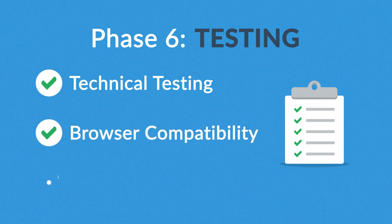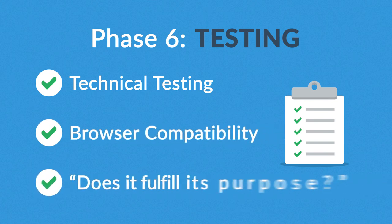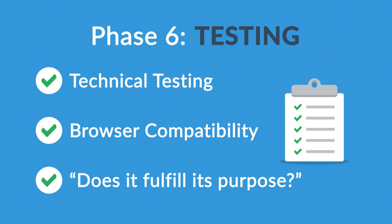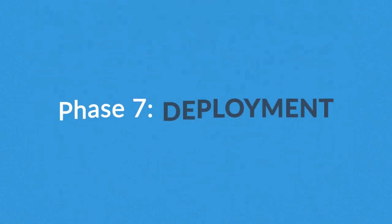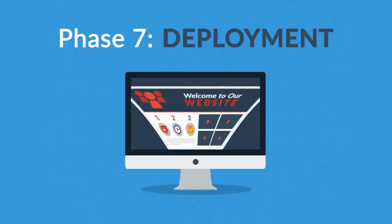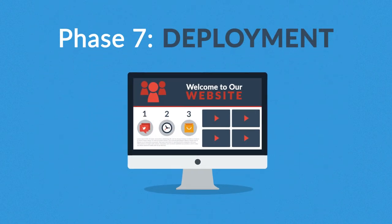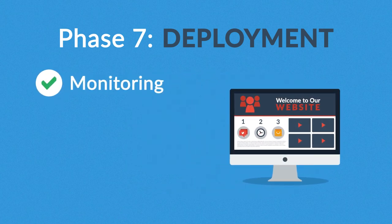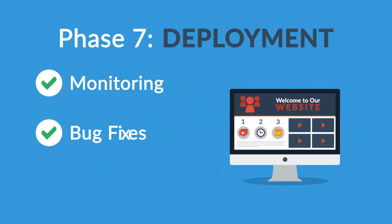Phase six: Testing. We test all the technical features like coding, scripts, and compatibility with major browsers, but we also ask ourselves whether the website really fulfills its purpose. Phase seven: Deployment. After we launch the site, our job is definitely not done yet — we always monitor what's happening after the start, enabling us to fix any possible deficiencies.